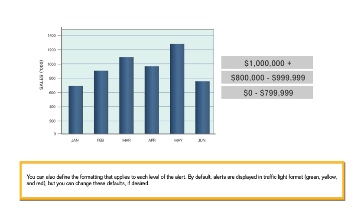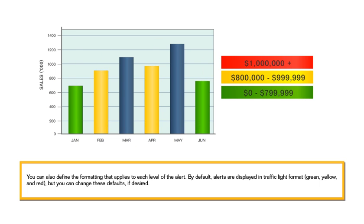You can also define the formatting that applies to each level of the alert. By default, alerts are displayed in traffic light format — green, yellow, and red — but you can change these defaults if desired.